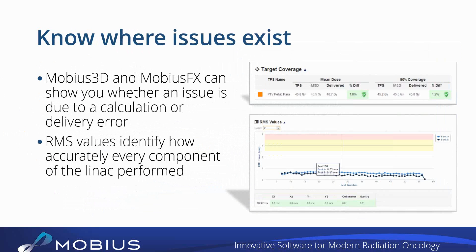With Mobius 3D and Mobius FX, they can actually show you whether an issue is due to a calculation or delivery error. If your Mobius 3D calculated and the Mobius FX delivered match really well, we know that the machine basically worked well. And if the TPS and Mobius 3D calculated match really well but the delivered does not match well, we know that something went wrong in the machine. If the TPS matches Mobius 3D and the delivered is different, we know that there's something going on in the TPS.